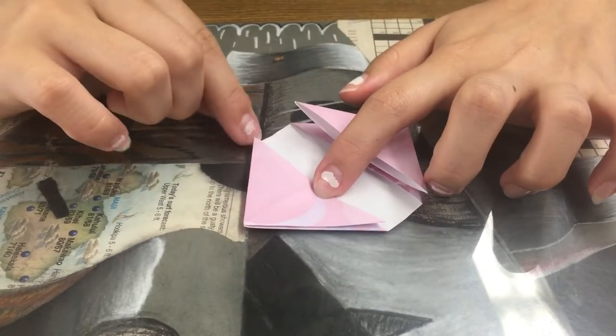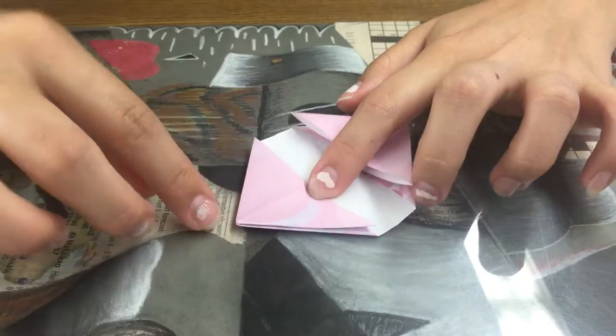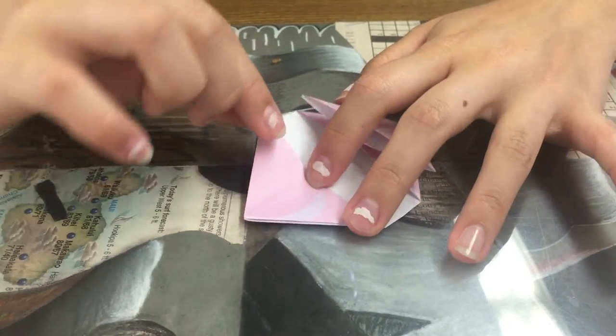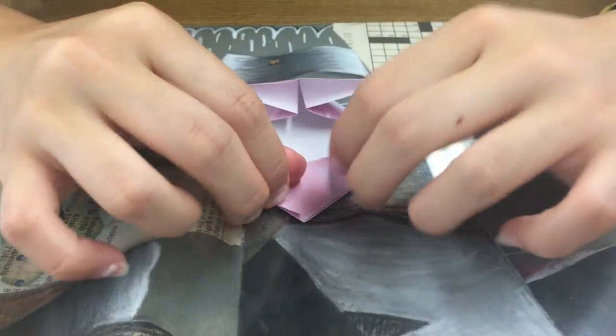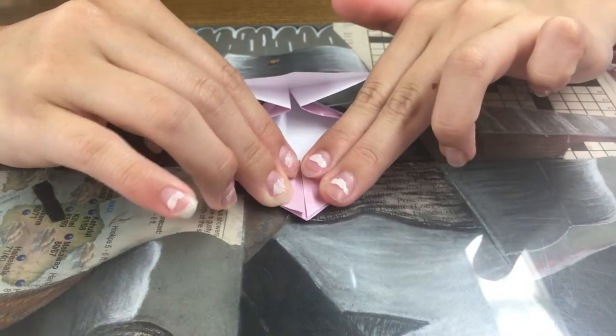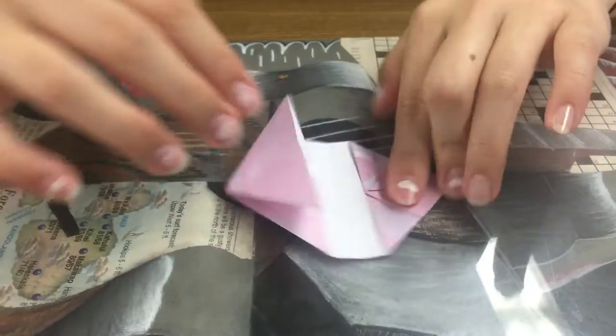Next we're going to bring these two trapezoid corners up to the top of our triangle and repeat this on the other side.